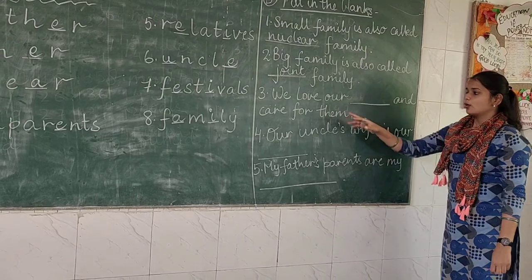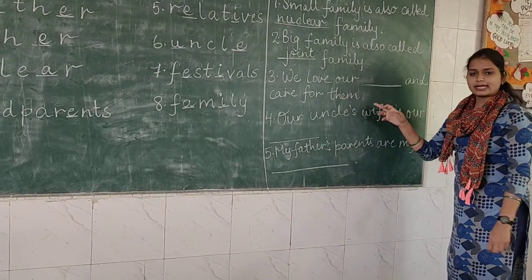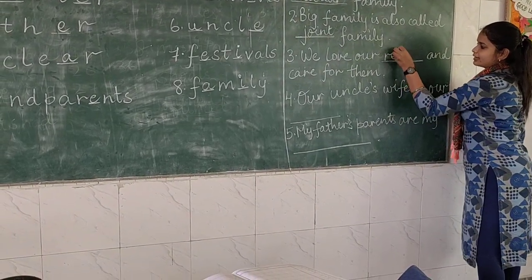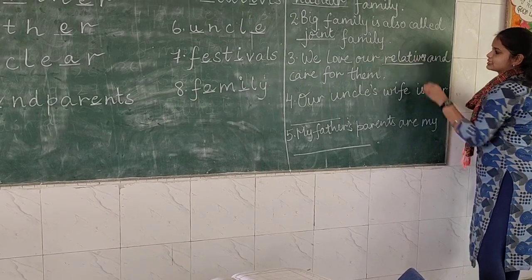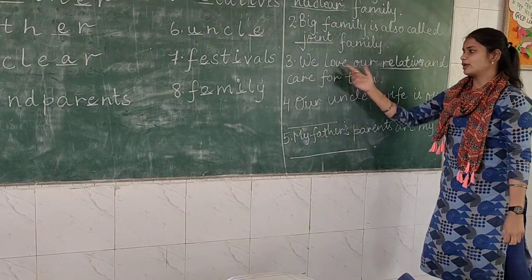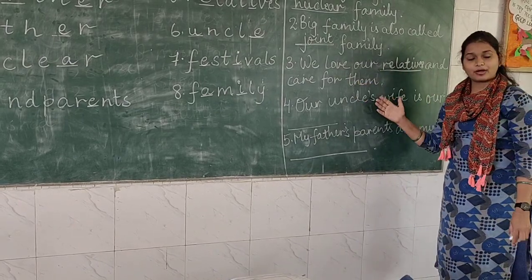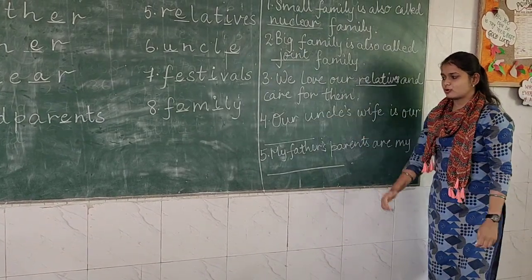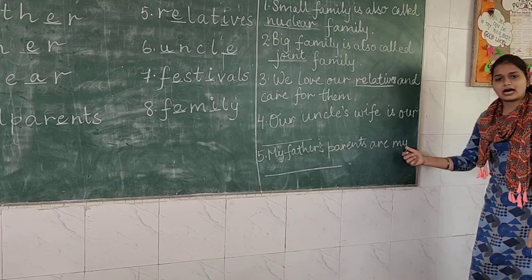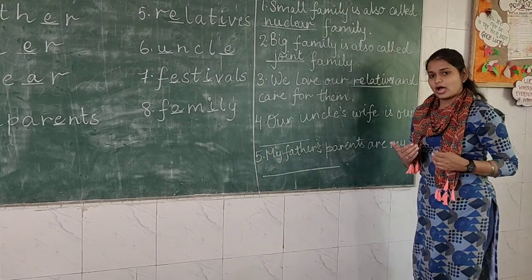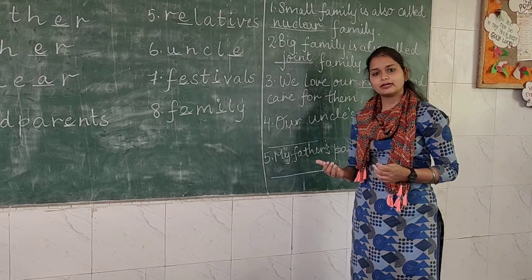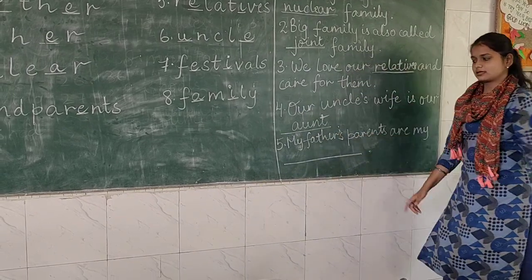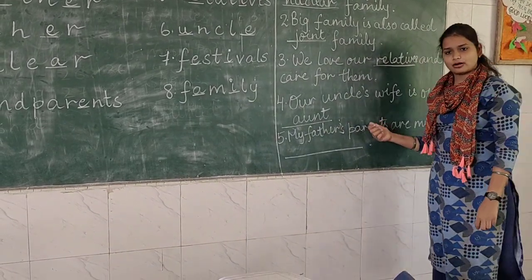Third: 'We love our dash and care for them.' The answer is relatives — we love our relatives and care for them. The spelling of relatives is R-E-L-A-T-I-V-E-S. Fourth: 'Our uncle's wife is our dash.' The opposite of uncle is aunt. The correct spelling is A-U-N-T — aunt.